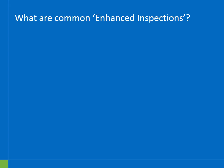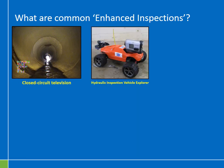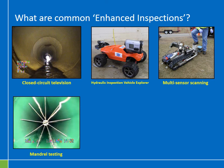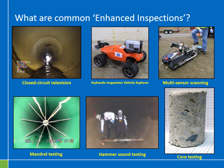Six common inspection technologies include: closed circuit television inspection; HIVE, or hydraulic inspection vehicle explorer — an innovative tool developed by MnDOT; multiple sensor scanning, which is an umbrella term that includes laser profiling, sonar scanning, and inclinometer measurements; mandrill testing; hammer sound testing of large concrete culverts to understand structural integrity; and core sampling — taking a core sample of a concrete pipe to do lab tests to understand its condition.